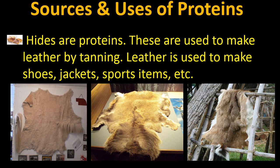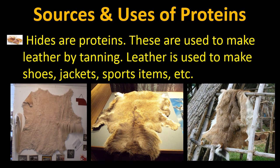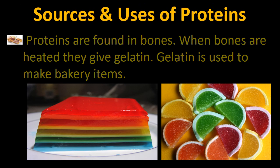Animal skin is used to make leather by tanning, and leather is used to make shoes, jackets and sport items. Proteins are also found in bones, and when bones are heated they give gelatin. Gelatin is used to make bakery items. You are able to see these beautiful pictures in different colors.